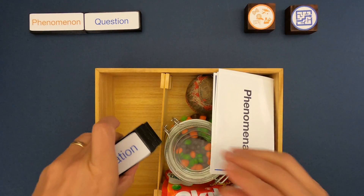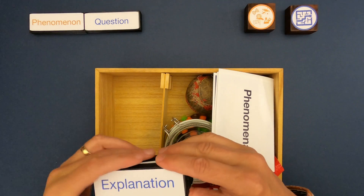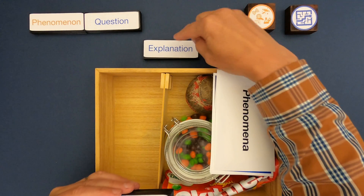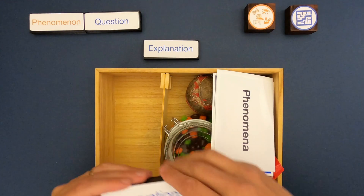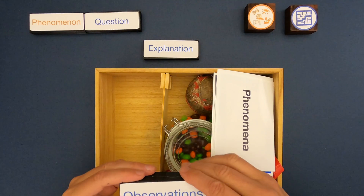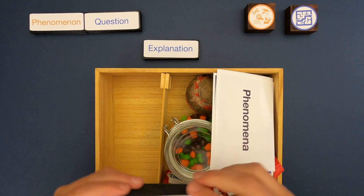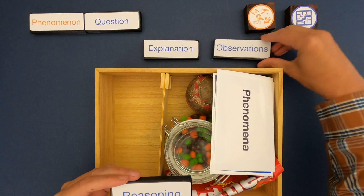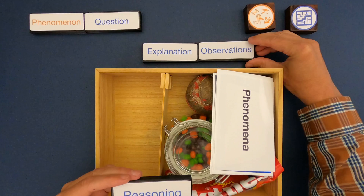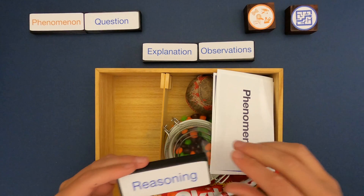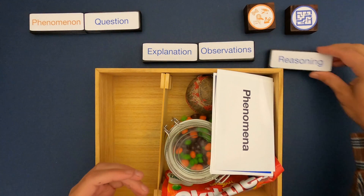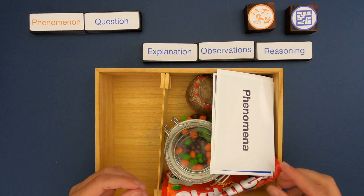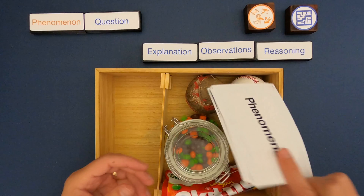As we think about the parts of an explanation, an explanation is going to be an answer to that question — it's going to tell us how the phenomena works. But a good explanation doesn't just start with what you think; it starts with careful observations of the phenomena, and then you use some logical reasoning to connect those observations to the explanation itself.